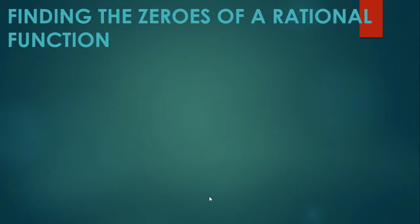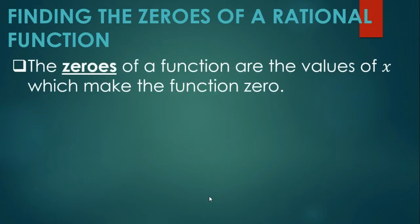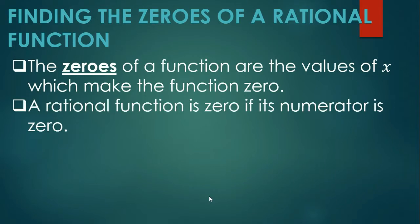So, let's define first what is a zero. The zeros of a function are the values of x which make the function zero. A rational function is zero if its numerator is zero.